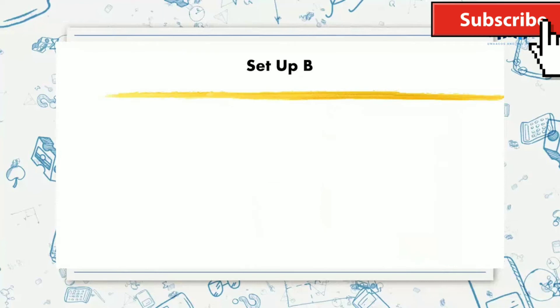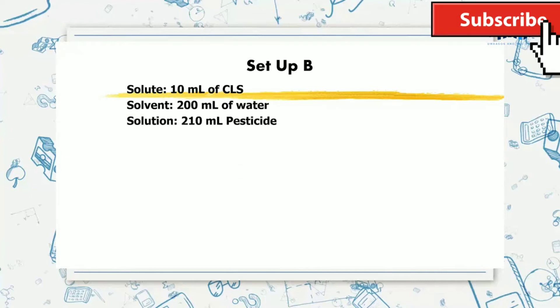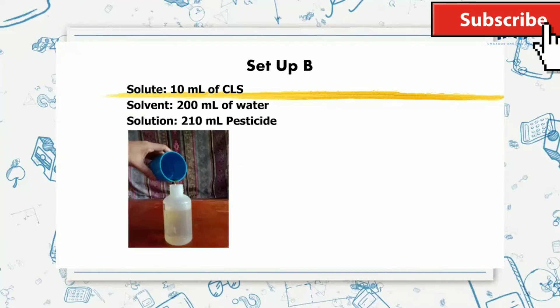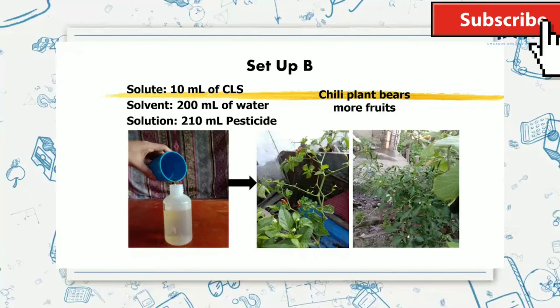In setup B, 10 ml of compost liquid substance was added into a 200 ml of water. Then a 210 ml pesticide was used to spray a chili plant in the garden. The chili plant bears more fruits. Therefore, the solution is effective to let the aphids stay away from the plant.